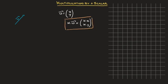What we notice here is that all of the components of u get multiplied by the number k. And k can be any real number. Now in a couple of minutes, I'll use the grid on the right-hand side here and work through an example with numbers to illustrate this formula.